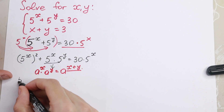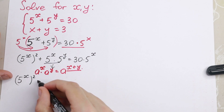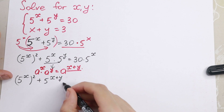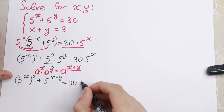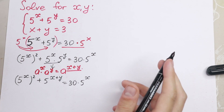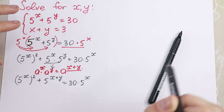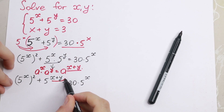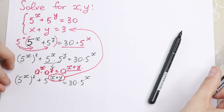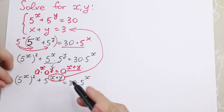What we will have? We will have 5 to the power x squared, plus 5 to the power x plus y, equal to 30 times 5 to the power x. And I hope you see that x plus y is a really useful expression, because x plus y equals 3. And we can easily plug in this 3 in this power of 5.